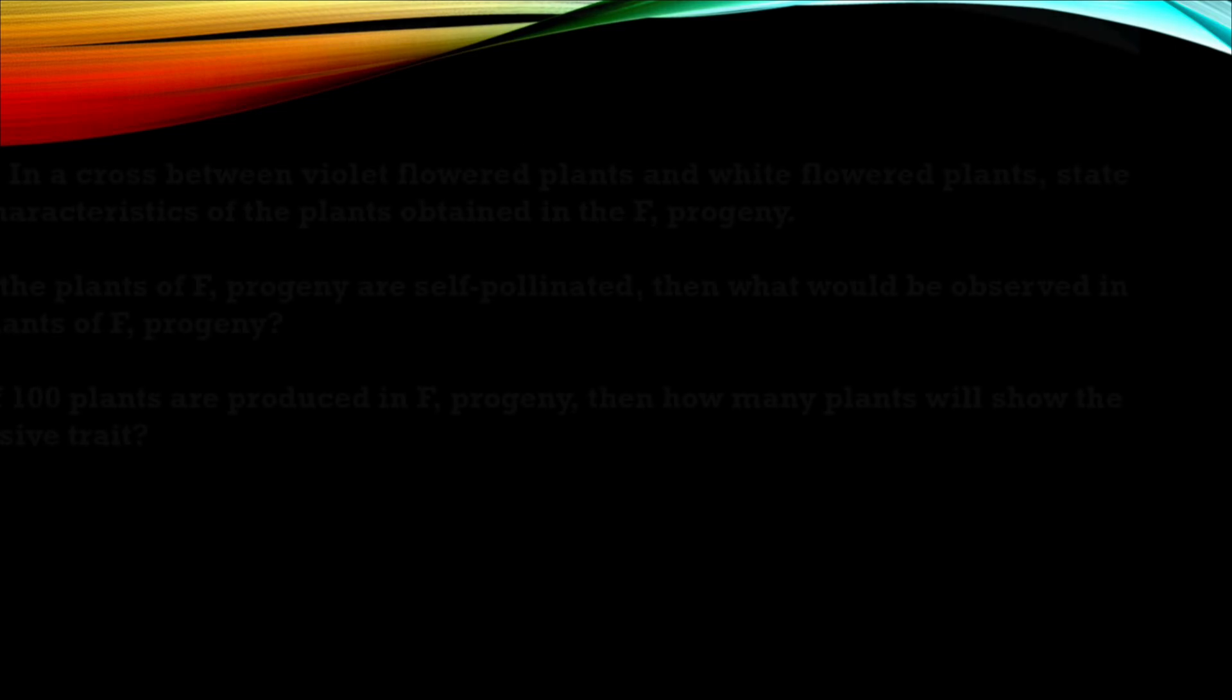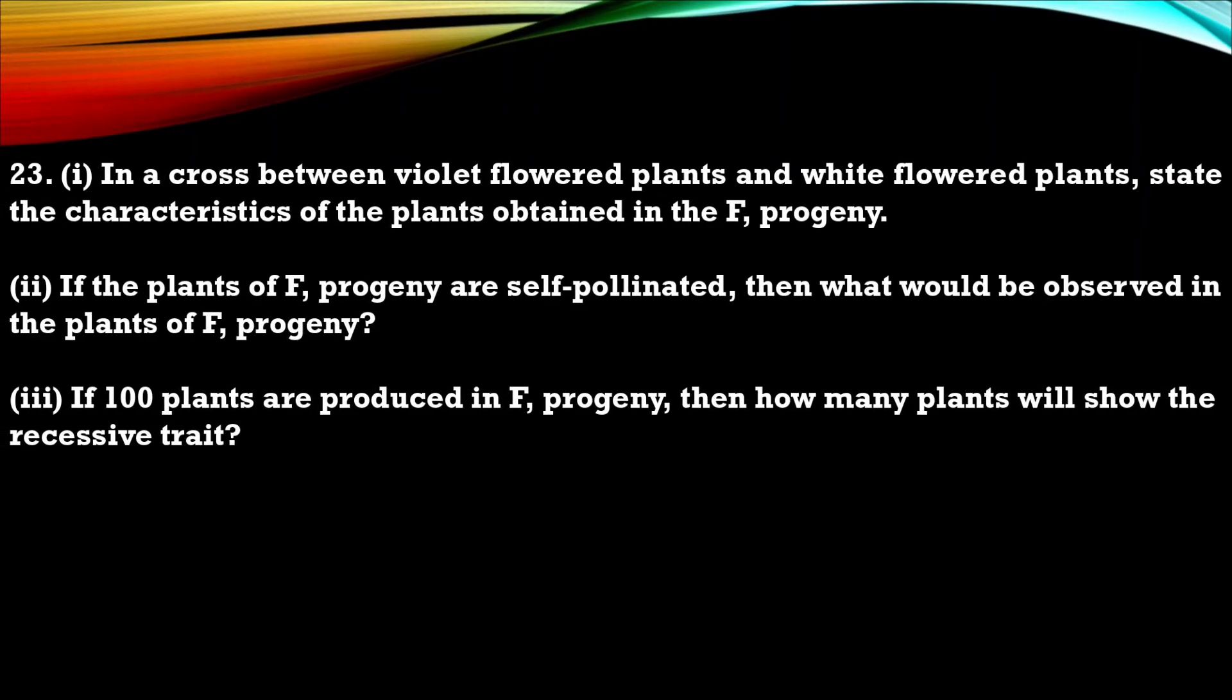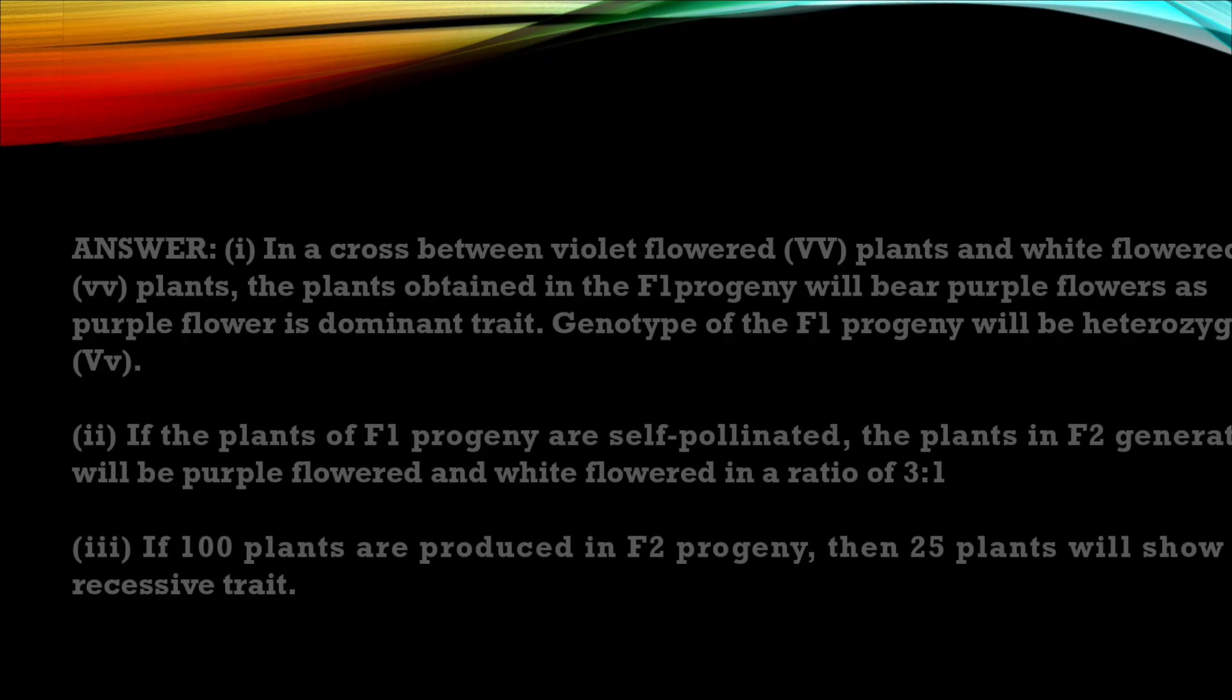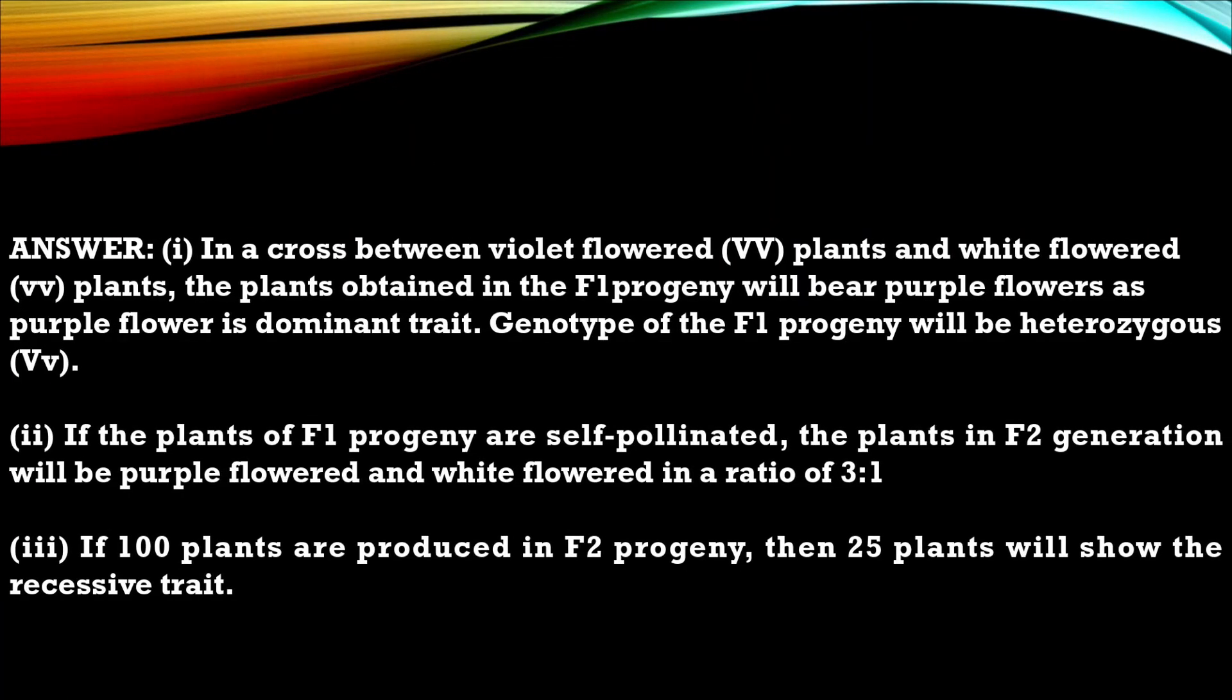Question 23. In a cross between violet flowered plant and white flowered plant state the characteristics of plant obtained in F1 progeny. If the plant of F1 progeny are self pollinated then what would be observed in the plant of F2 progeny? If hundred plant are produced in F2 progeny then how many plants will show the recessive trait? This is the answer for that question.